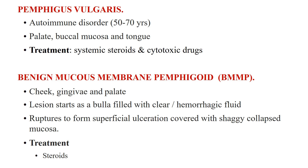Pemphigus vulgaris is an autoimmune disorder affecting the older age group from 50 to 70 years. Oral lesions are seen in 50% of cases and may precede the skin lesions. Oral ulcerations are superficial and involve the palate, buccal mucosa, and tongue. Treatment consists of systemic steroids and cytotoxic drugs.